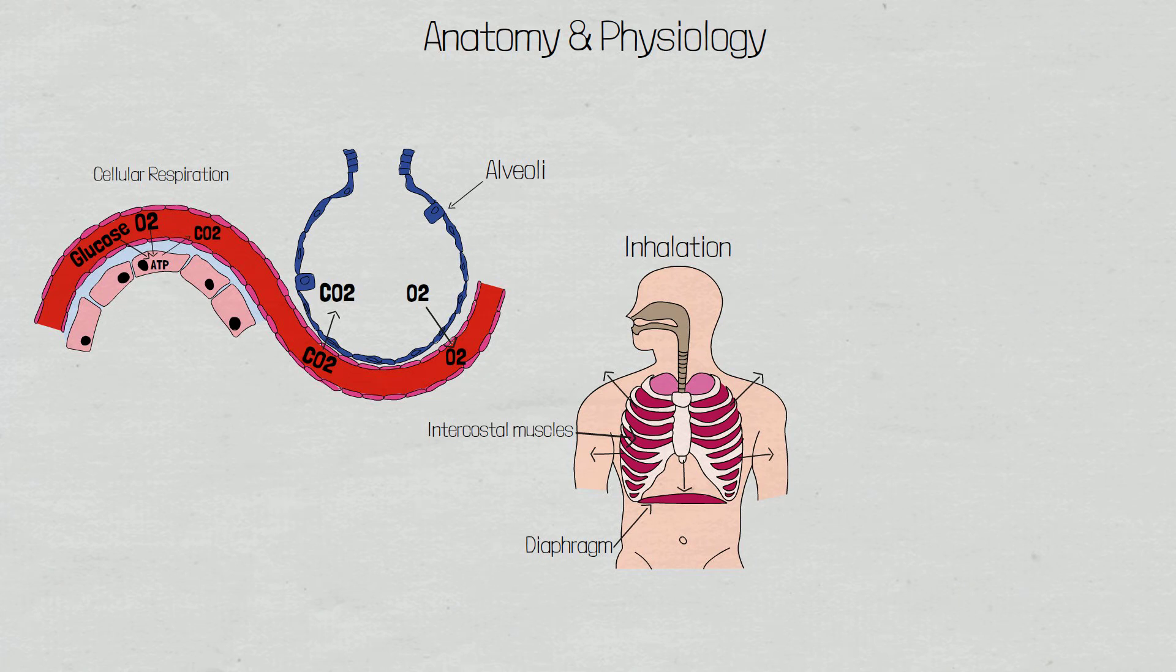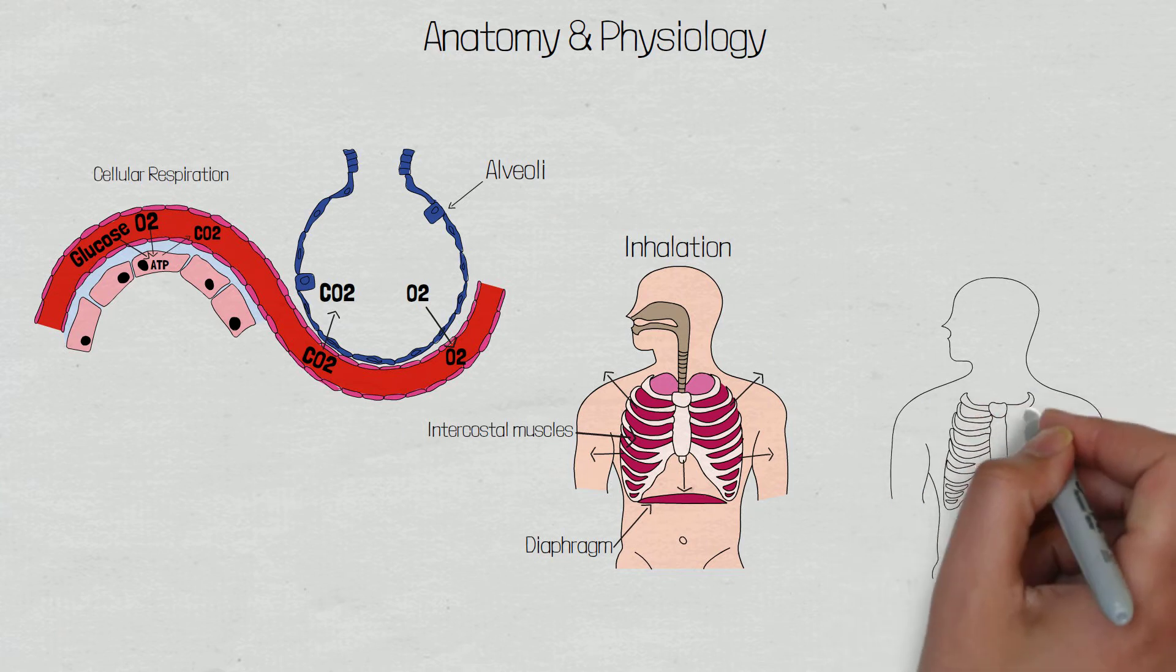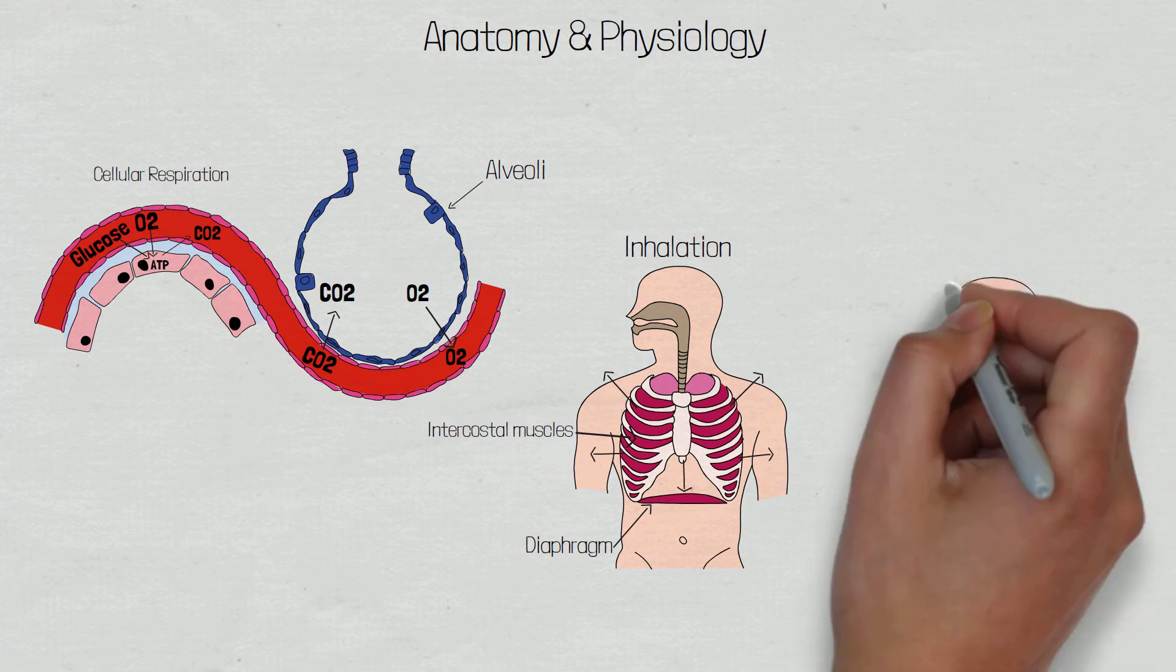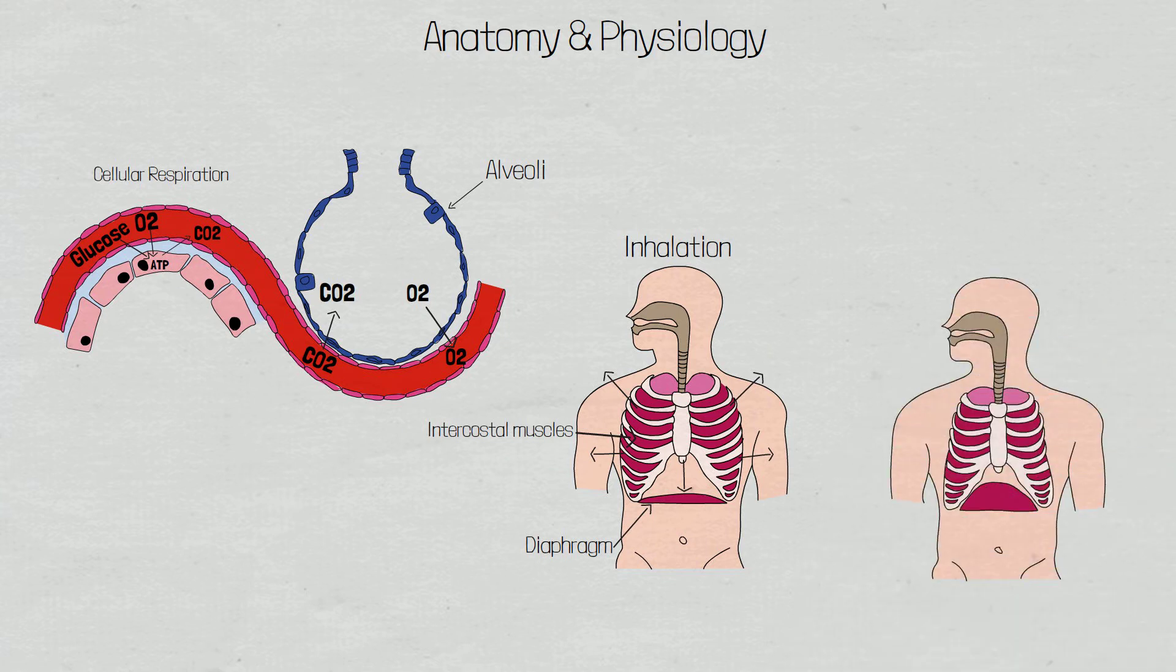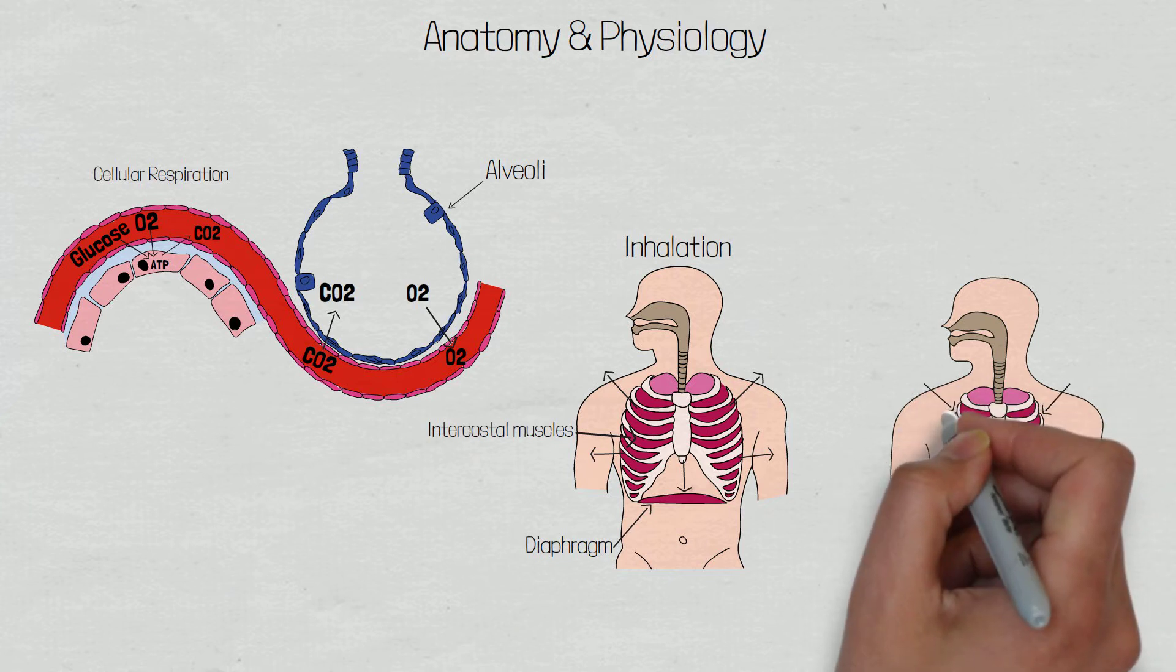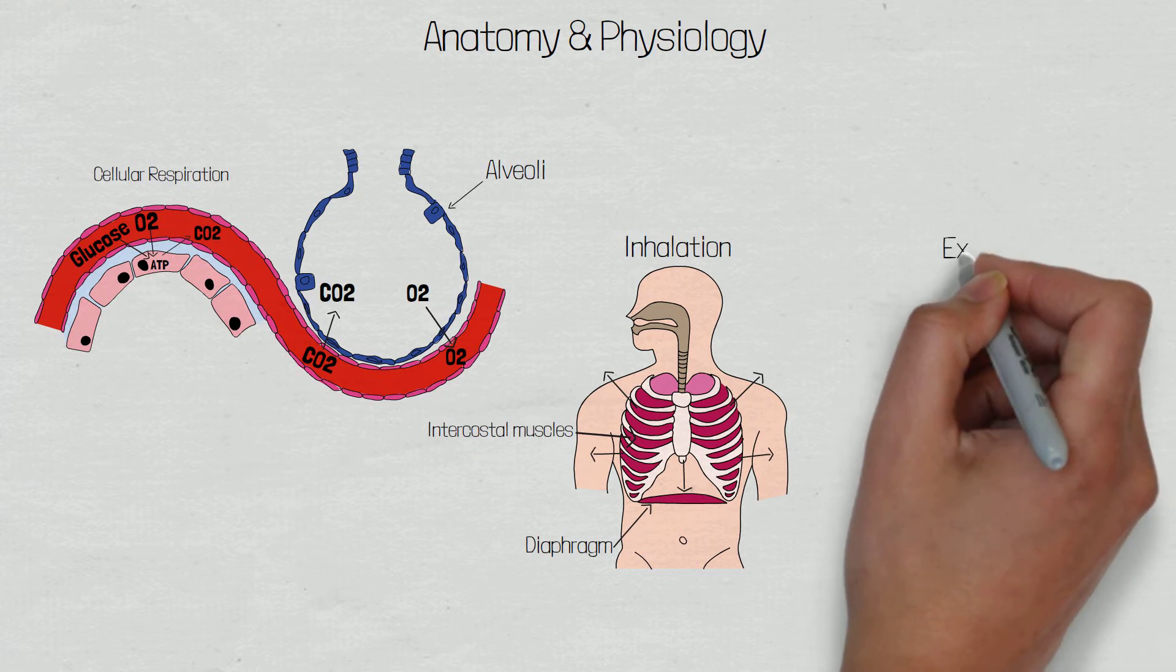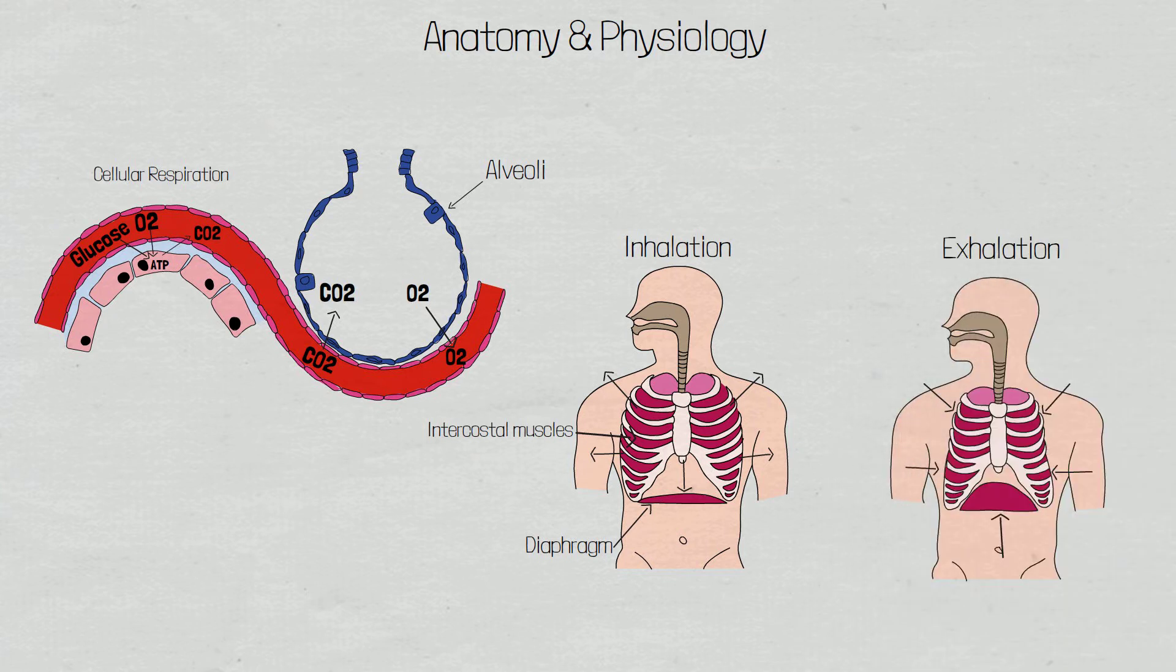The second phase is expiration. In contrast to inspiration, this is a passive process, which means no muscle contractions are involved during normal expiration. The diaphragm and intercostal muscles relax, which increase intrathoracic pressure. Once this pressure is greater than the atmospheric pressure, air will be exhaled with the expulsion of waste products, such as carbon dioxide. Both these processes combine to make ventilation.